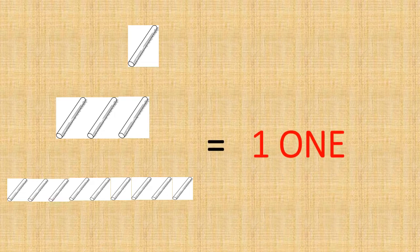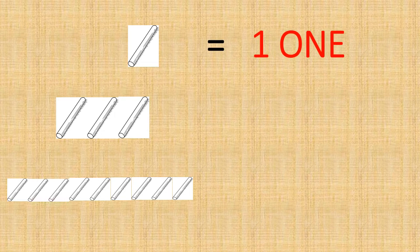In this slide, you see many sticks. These sticks represent ones. In the first picture, how many ones do we see? We have one one. It is also written as only number one. Let's see another example.